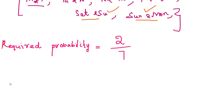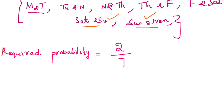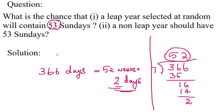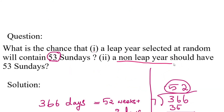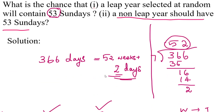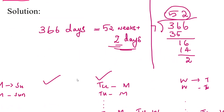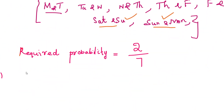Now let's go to the second part. The question is: what is the probability that a non-leap year has 53 Sundays? A non-leap year has 365 days. Dividing 365 by 7 gives 52 weeks plus 1 remaining day — so 365 days equals 52 weeks plus 1 day.